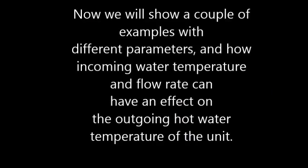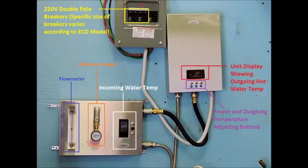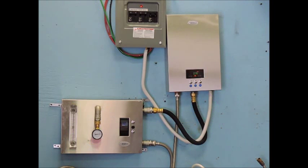Now we will show a couple of examples with different parameters and how incoming water temperature and flow rate can have an effect on the outgoing hot water temperature of the unit. In this shot, you can see we have added an additional device to monitor our water flow, our pressure, and our incoming water temperature.